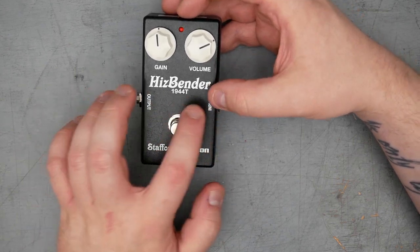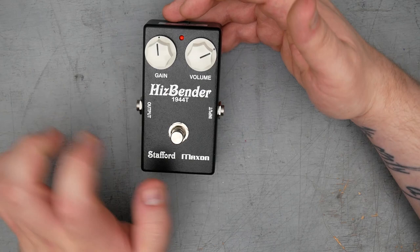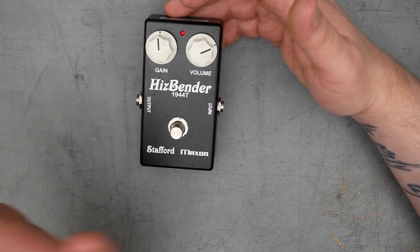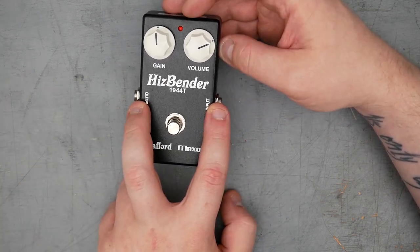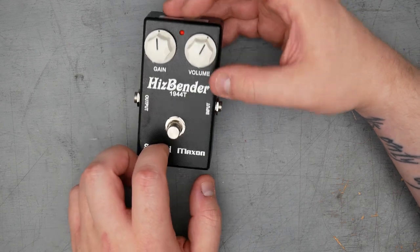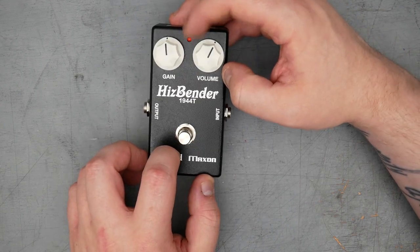Hisbender, the name obviously suggests Tone Bender, but we'll see. 1944T, no idea. Input and output jacks are side mounted. Gain and volume controls, little three millimeter red LED.